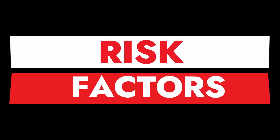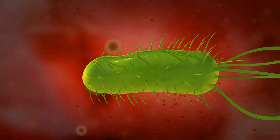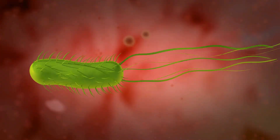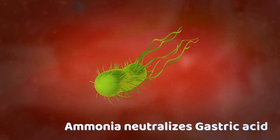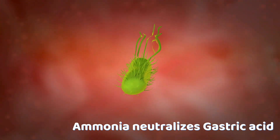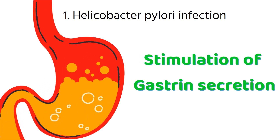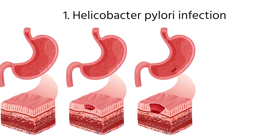A major risk factor of peptic ulcer disease is H. pylori infection. Helicobacter pylori resides in the stomach or duodenum and hydrolyzes urea to produce ammonia, which neutralizes the gastric acid. Because of that, gastrin secretion is stimulated, and continuous stimulation of gastrin secretion disrupts the mucosal layers, making them more susceptible to acid damage.